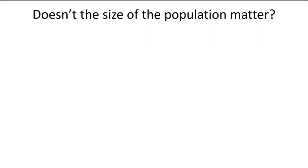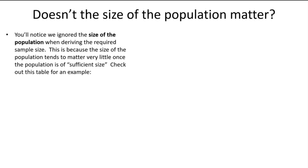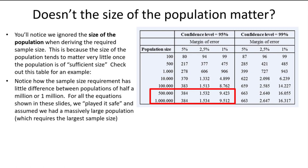You may have noticed that in the two equations used in this video series, we didn't worry about the total size of the population we are drawing our sample from — but shouldn't that matter? It turns out it's not that big a deal. Look at the bottom part of this table: for the exact same level of 95% confidence and a margin of error of 5%, 2.5%, or 1%, whether the population is half a million or 1 million people, the required sample size is exactly the same or nearly exactly the same. Once the population is some arbitrarily large number, we can simply ignore the population size when calculating required sample size.